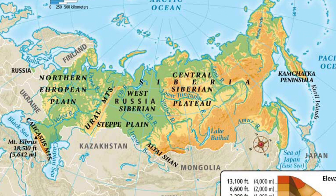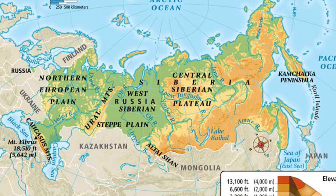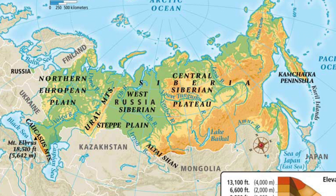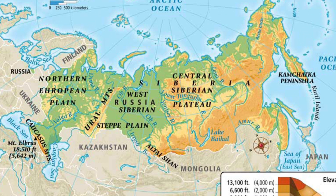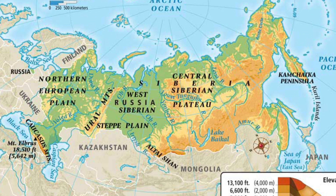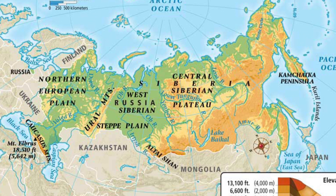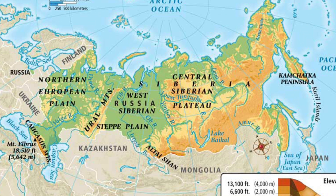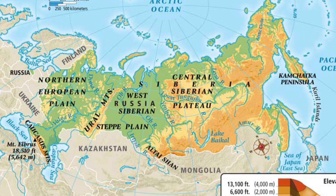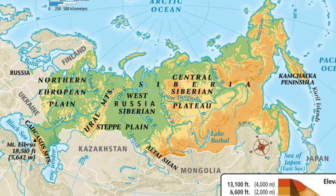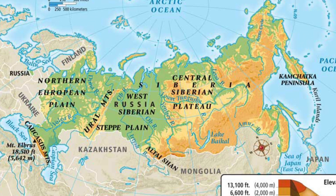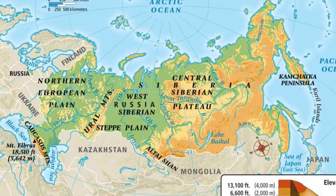Then you have the Caspian Sea on Russia's southwestern border. It's the largest inland body of water in the world. Then Lake Baikal, found in southern Siberia — 20% of Earth's fresh water is located here.